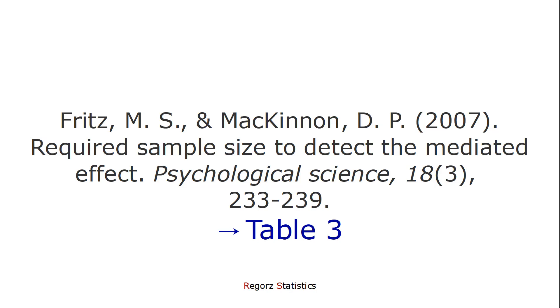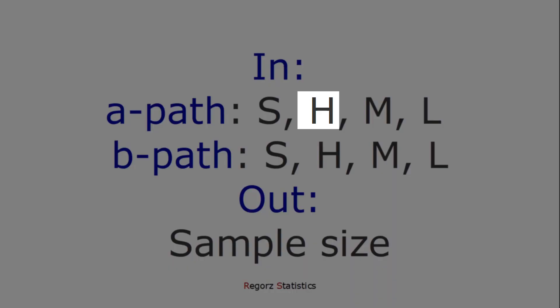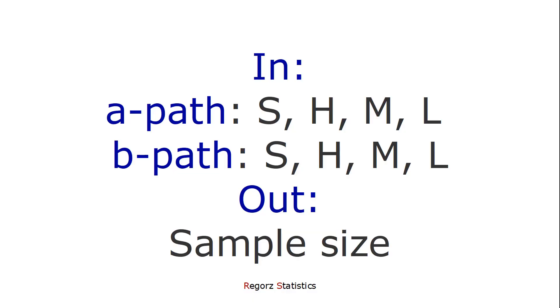So as long as you're looking at the power of 0.80, they have done all those simulations for the different approaches for testing mediation. The only thing you have to do is go to the paper, to the Table 3, and there you have to decide, for the a path and the b path, how large is the effect. And you have the choice between small, halfway between small and medium, medium and large effects. And as a result, you get the sample size for the mediation analysis technique you choose.